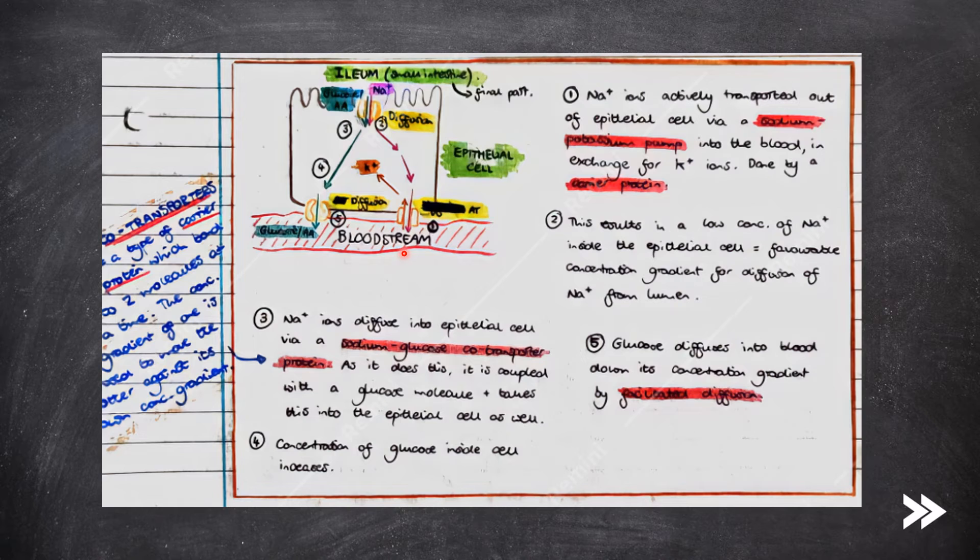First of all, Na+ ions are actively transported out of the epithelial cell into the blood via a sodium-potassium pump in exchange for potassium ions. This is done by a carrier protein. This results in a low concentration of Na+ ions inside the epithelial cell, creating a favorable concentration gradient for the diffusion of Na+ from the lumen. Next, Na+ ions therefore diffuse into the epithelial cell via a sodium-glucose co-transporter protein. As it does this, it is coupled with a glucose molecule and takes this into the epithelial cell as well. Therefore, the concentration of glucose inside the epithelial cell increases. Glucose diffuses into the blood down its concentration gradient by facilitated diffusion.